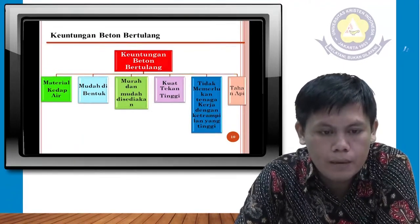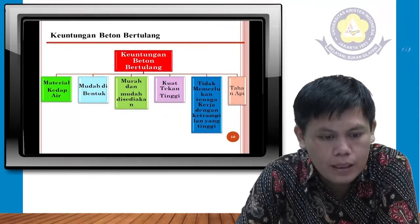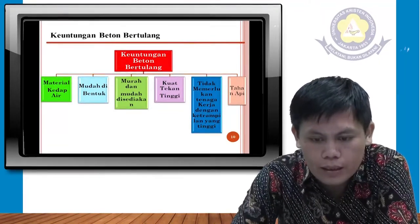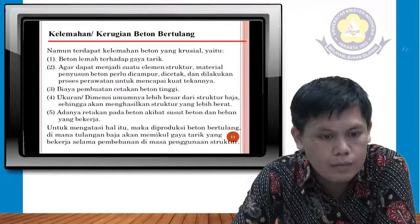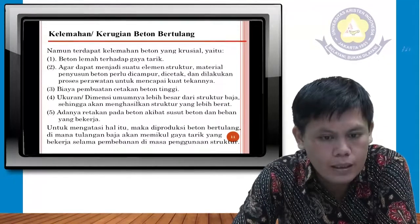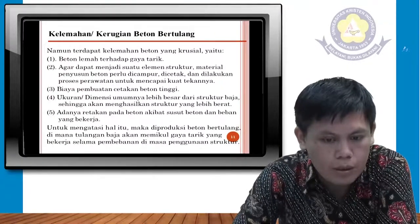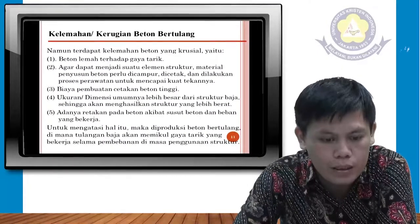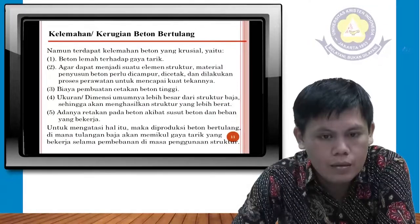Keuntungan daripada beton bertulang antara lain: material kedap air, mudah dibentuk, murah dan mudah disediakan, kuat tekan tinggi, tidak memerlukan keterampilan kerja yang tinggi, dan tahan api. Sedangkan kelemahannya: lemah terhadap tarik, biaya cukup tinggi, ukuran dimensi lebih besar daripada struktur baja sehingga menghasilkan struktur yang lebih berat, dan adanya retakan akibat susut beton dan beban yang bekerja.